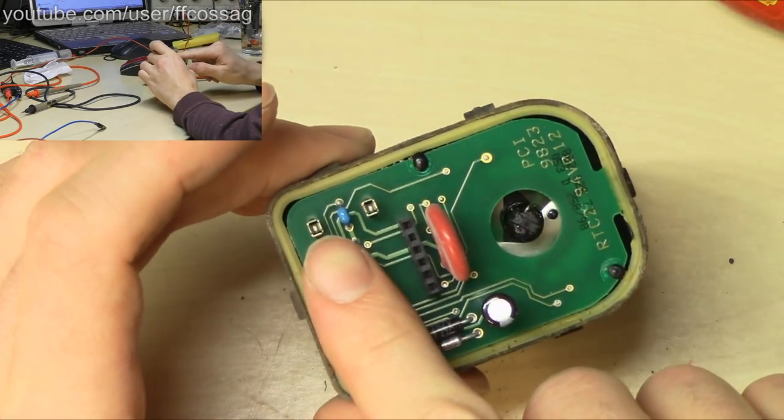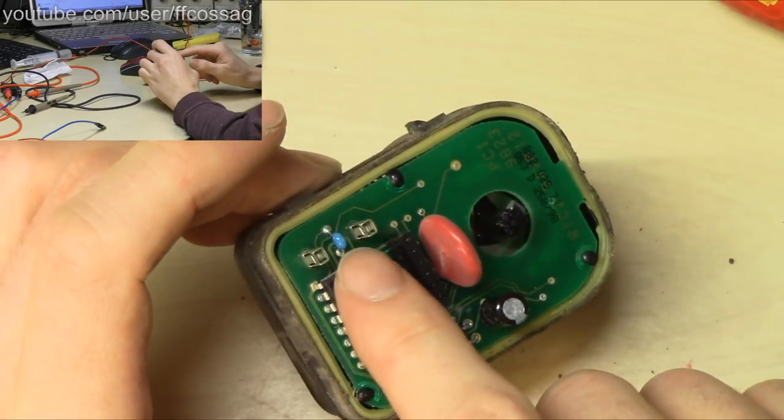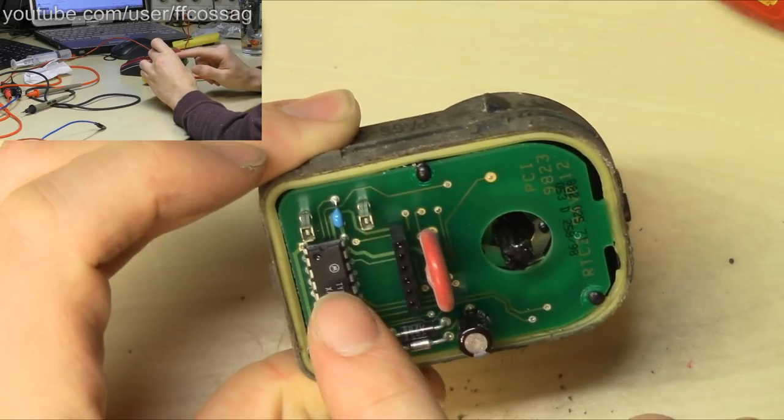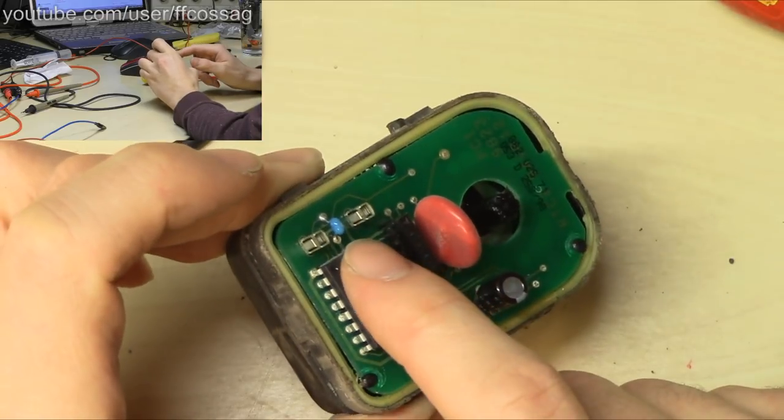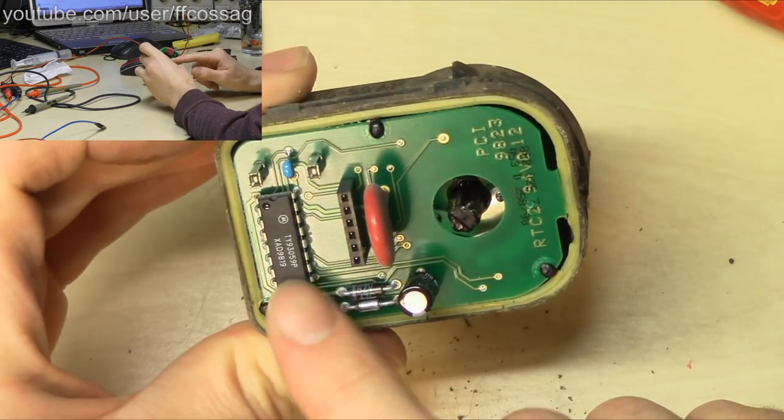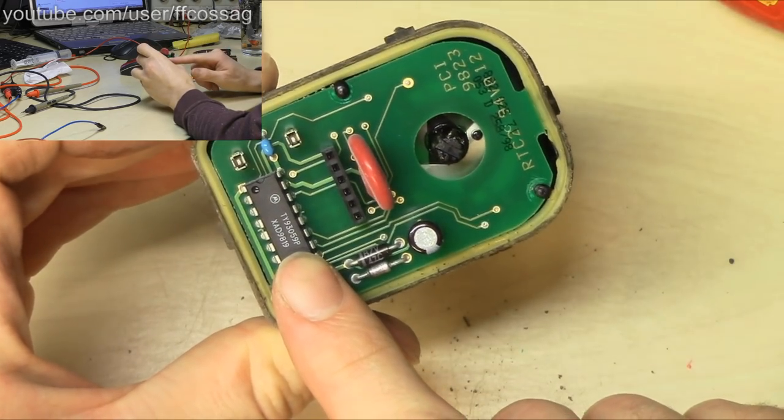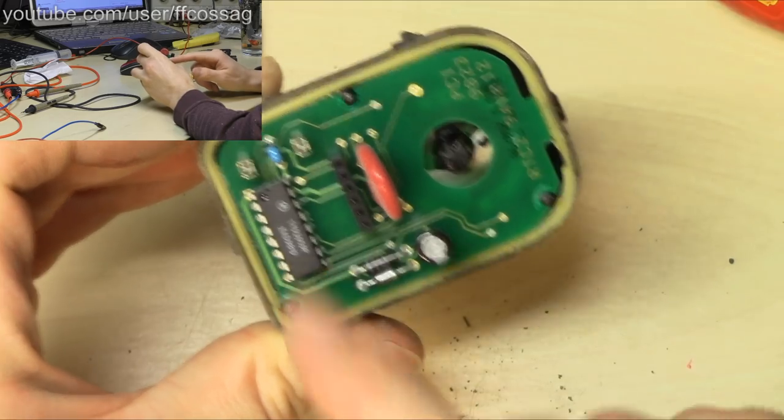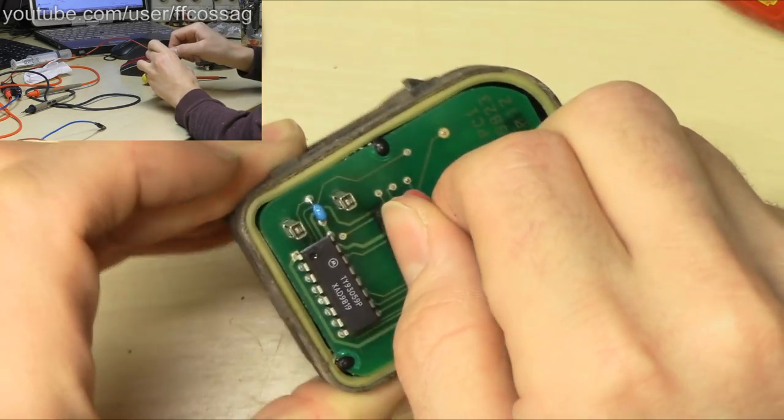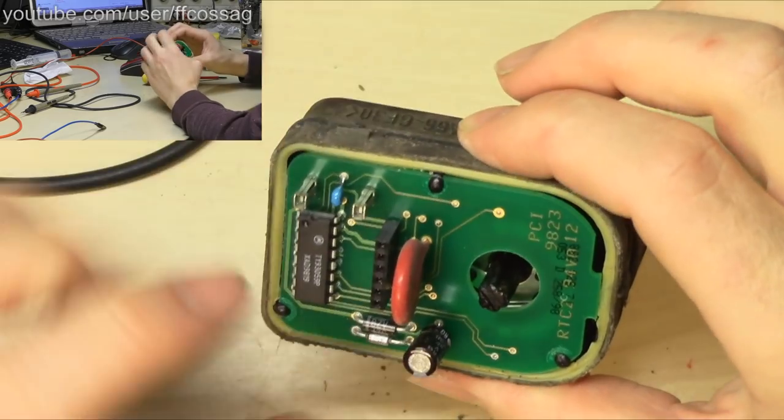So, these are going to be the pins going down to the motor, or a small capacitor, probably. Now, this could be some form of resonator, in case this is some kind of processor. Wow. That's very, very fancy, but I want to get this board out.